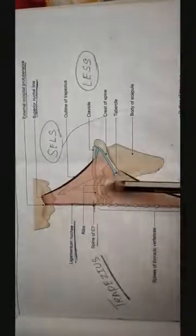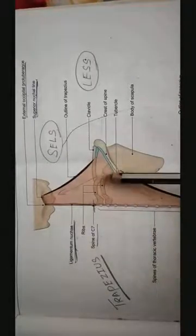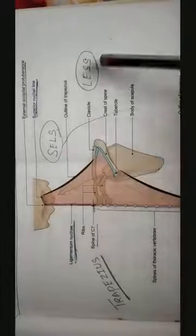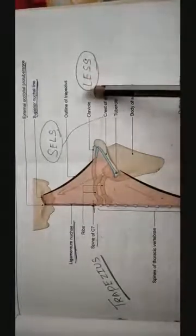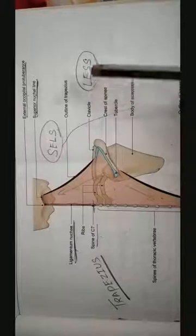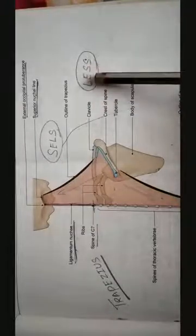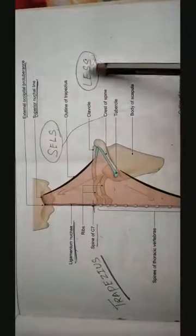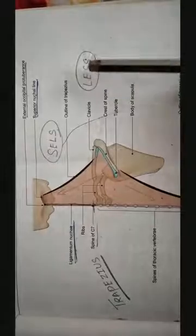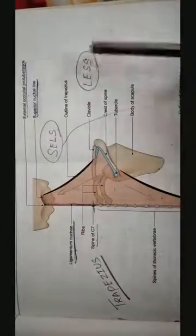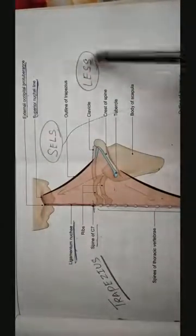In order to remember the origin of trapezius muscle, just try to remember the mnemonic LESS. In that, L stands for ligamentum nuchae, E stands for external occipital protuberance, S stands for superior nuchal line and another S stands for spine C7 to T12.